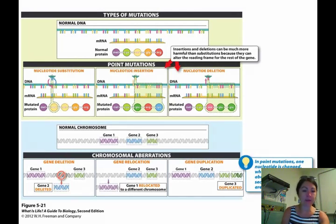If we have a whole gene that's deleted, gene 1, and then gene 2 is deleted, and gene 3, if we're missing a whole gene, that's going to be a really big mutation.